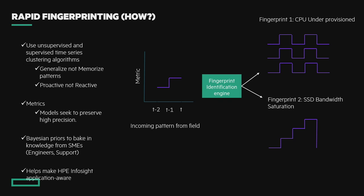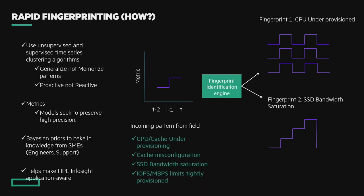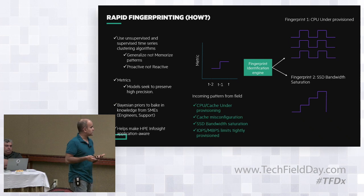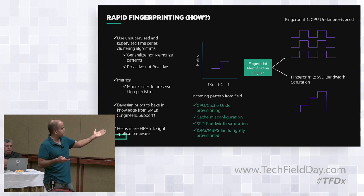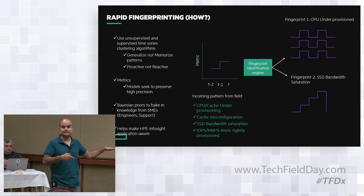From a metrics perspective, we try to preserve high precision. That's very different from what Google or Facebook might want, because for us what matters is what we tell the storage admin. We don't want false positives — we want very high precision. It's okay to miss a few alerts, but what we tell the admin we want to be as close to 100% sure as possible. Technically this is what we call Bayesian priors, baked into our models. That's what helps InfoSight become application-aware. The kinds of problems we capture include CPU cache under-provisioning, cache misconfiguration, and bandwidth saturation.